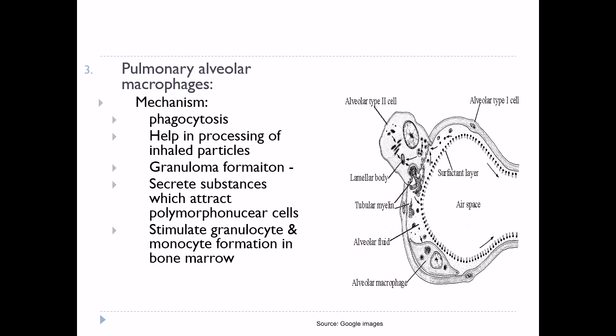Pulmonary alveolar macrophages play an important role in defense by the following mechanisms. First, ingestion of inhaled bacteria as well as small particles by phagocytosis, and they are carried away by lung lymphatics. Second, they help in processing or digestion of inhaled particles and release the digestive products into the lymph. If the particle is not digestible, macrophages form a giant cell capsule around the particle — for example, tuberculosis bacilli in tuberculosis, and silica dust and carbon particles in silicosis.